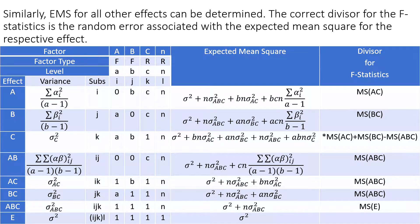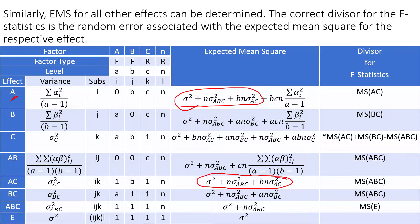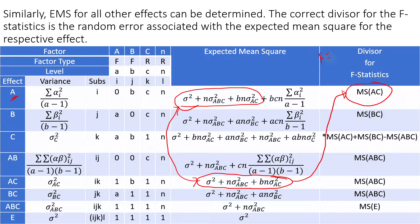For the divisor in the F-statistic, we look at the error associated with each effect. For example, for effect A, we look at the EMS for A and find which other EMS contains the same components except for the A effect. The AC term matches, so that becomes the divisor. Therefore, the F-statistic for A is MS_A divided by MS_AC.